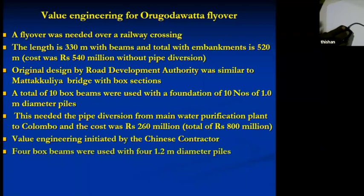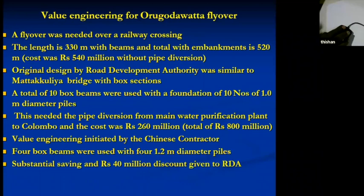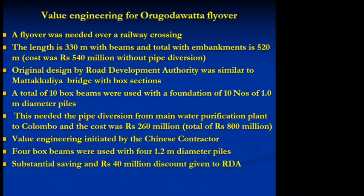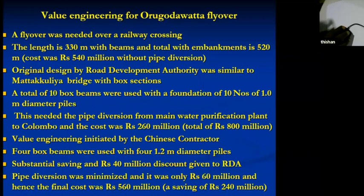We used four box girders and four piles of 1.2 meter diameter. There was a substantial saving in the pipe diversion cost — it was reduced to only 60 million worth of work. RDA was also given some discount. Out of 800 million, we completed the bridge for about 550 million — a saving of 240 million. That was a significant achievement.